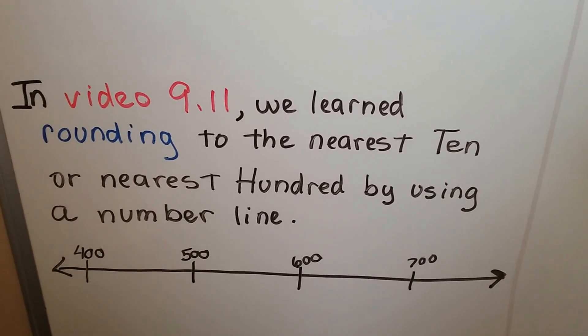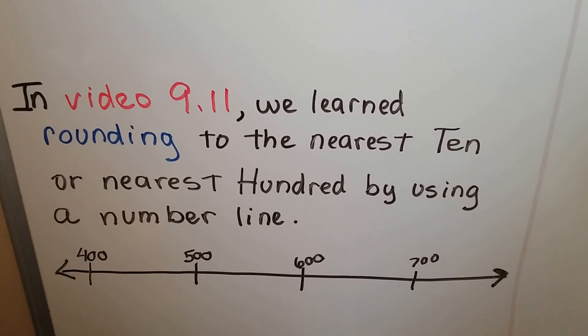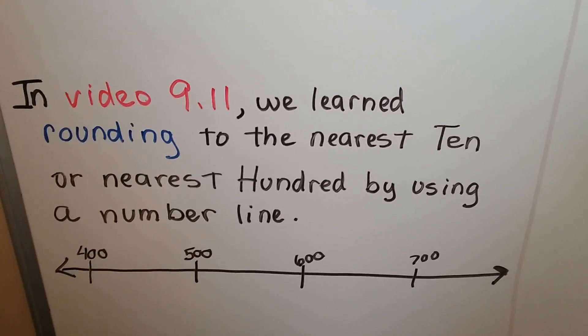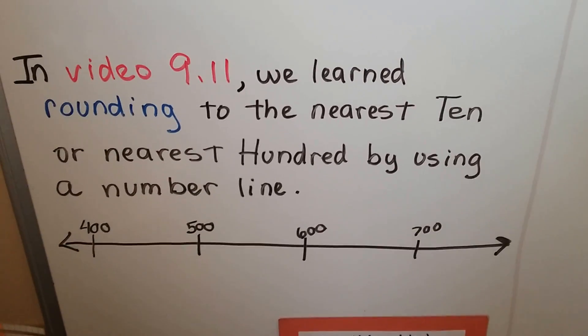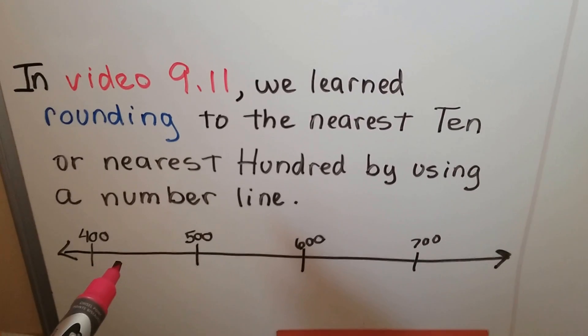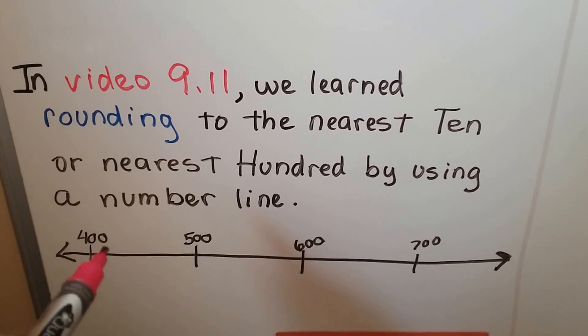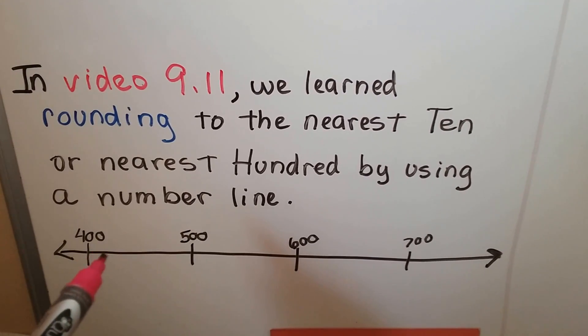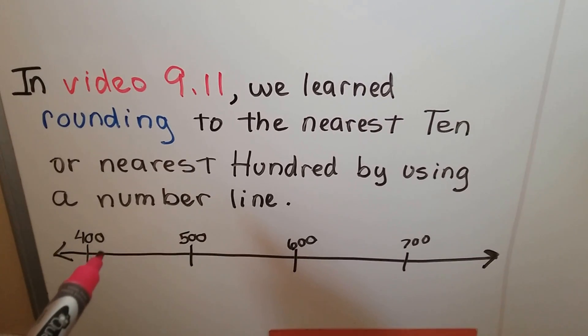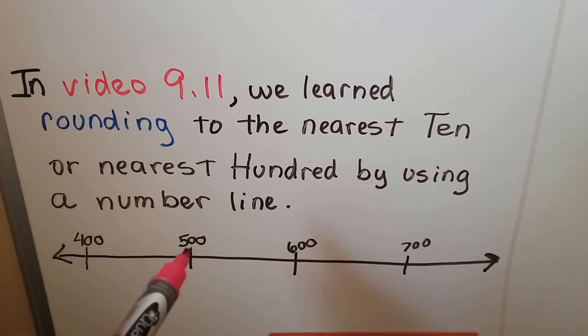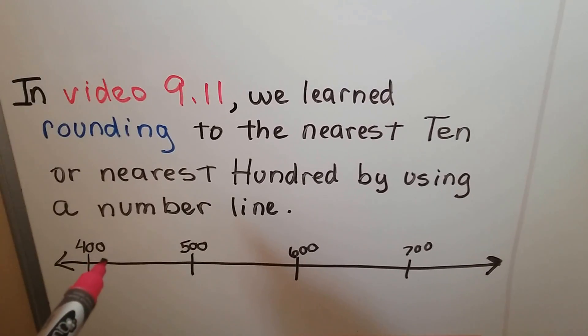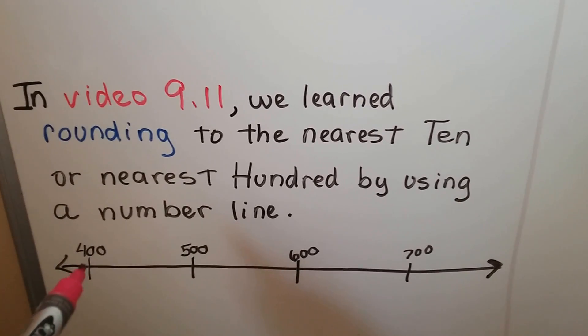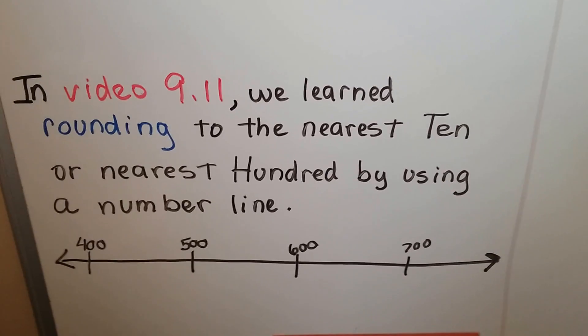Now in video 9.11 we learned rounding to the nearest 10 or nearest hundred by using a number line. If we have a number that is very close, like 405 is very close to 400, it's not that close to 500. 405 is very close to 400. We can round it and just say 400 and estimate an answer.